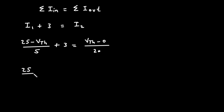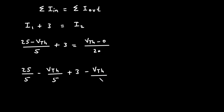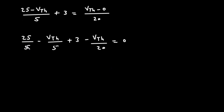So it will be 25/5 minus VTH/5, then plus 3, and if we take the I2 term to the left side it will be minus VTH/20, equal to 0. So: 25/5 − VTH/5 + 3 − VTH/20 = 0. Taking VTH common: VTH × (−1/5 − 1/20).